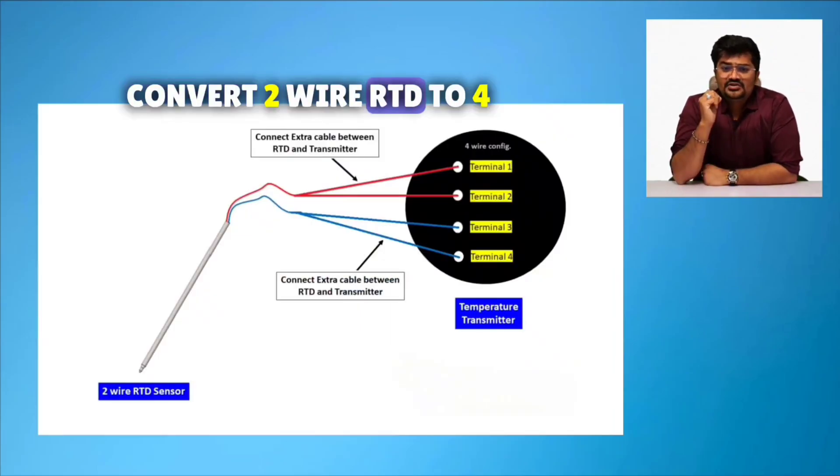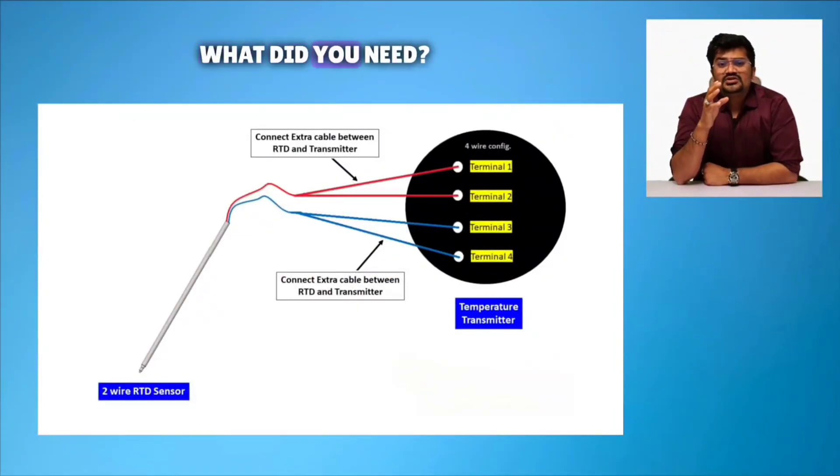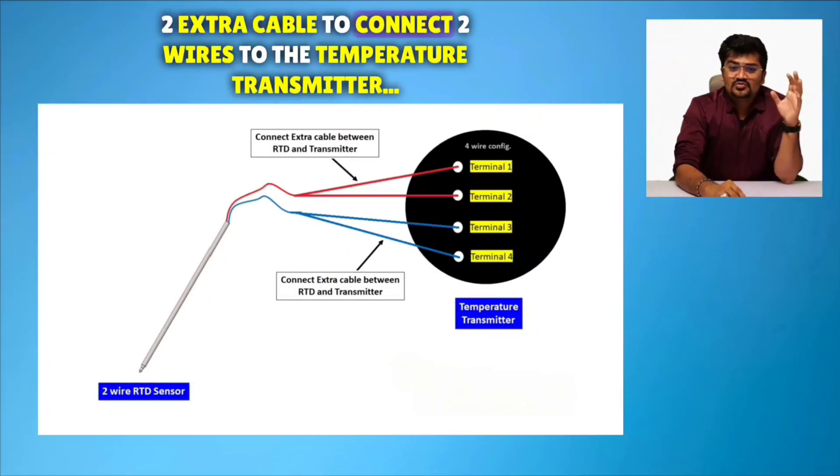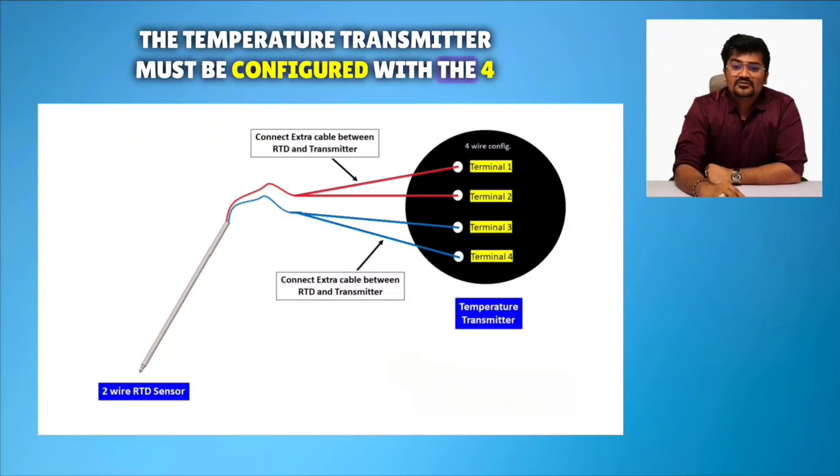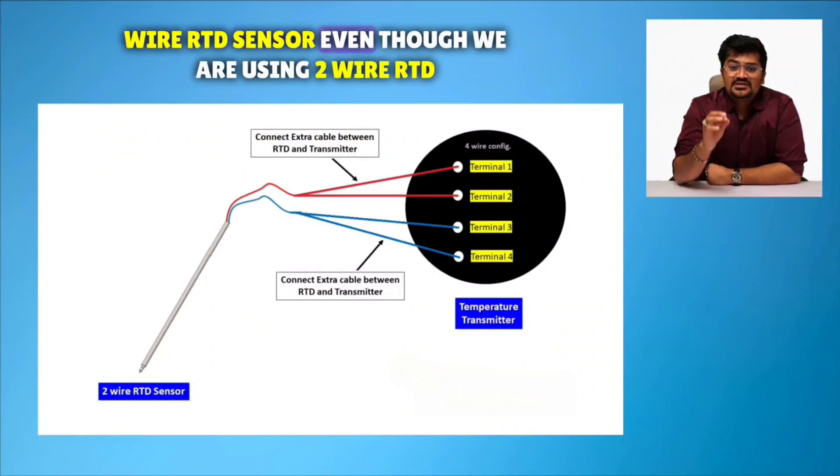To convert 2-wire RTD to 4-wire RTD, you need 2 extra cables to connect 2 wires to the temperature transmitter. The temperature transmitter must be configured with the 4-wire RTD sensor even though we are using 2-wire RTD.